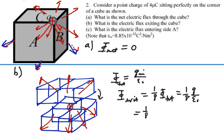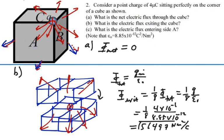We can calculate this. This is one-eighth of four microcoulombs divided by 8.85 times 10 to the minus 12, and that is equal to 56,497 newton-meter-squared per coulomb. So that is the flux that is exiting this cube.